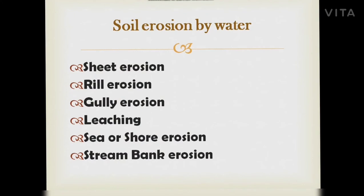Soil erosion by water has several types. First, sheet erosion: the slow removal of a thin layer of soil when vegetation is destroyed. Second, rill erosion: when sheet erosion continues for long, the runoff forms many finger-like rills or grooves over a large area. Third, gully erosion: during heavy downpour, deep gullies are formed in bare soils due to water runoff. Fourth, leaching: after harvesting, farmers leave the soil bare; during rainfall, nutrients in the soil are leached into lower layers. Fifth, sea-shore erosion: tidal waters cause considerable damage to coastal soil. Sixth, stream bank erosion: streams and rivers change courses by cutting one bank and depositing silt on the other.